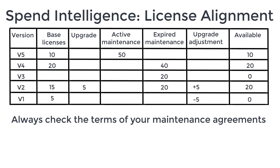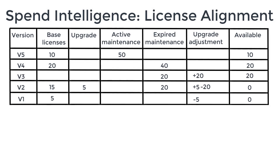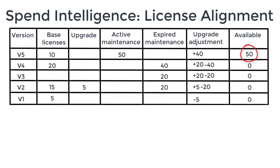In particular you usually have to ensure there is no gap between each maintenance agreement. For our example, let's assume all is well and that we are allowed to use our 50 active maintenance licenses for V5 to upgrade all earlier versions. We can now add 20 to V3 and remember to subtract the matching 20 from V2. Notice that we can use multiple addition and subtraction operators to help keep track of what we've done. The available licenses for each version update, and so we continue using the valid maintenance to adjust the available licenses to later versions. Now we can see that we're entitled to claim 50 Vantosi V5 licenses.